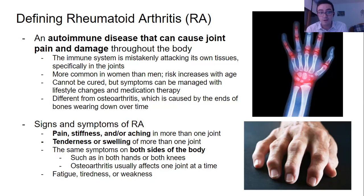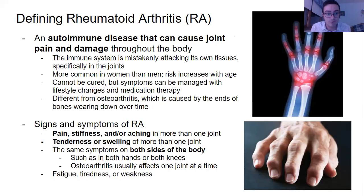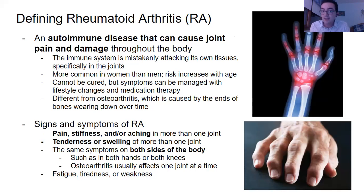Rheumatoid arthritis is different from osteoarthritis. Osteoarthritis is a gradual wearing down of your joints, whereas rheumatoid arthritis is an autoimmune disease that causes joint pain and damage throughout the body — the immune system mistakenly attacks its own tissues in the joints. It's more common in women, risk increases with age, it cannot be cured, and it typically appears on both sides of the body simultaneously.